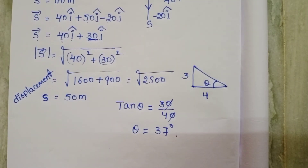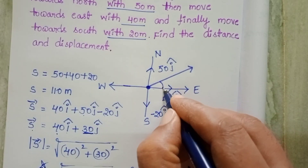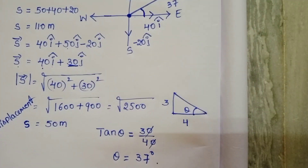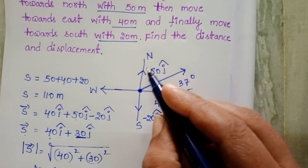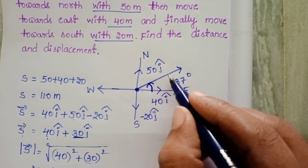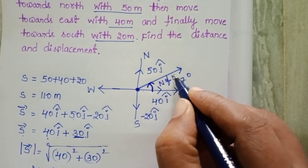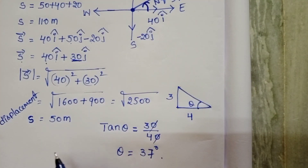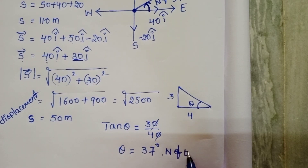But in which direction is this acting? The angle is 37 degrees. Since we get a positive value, this corresponds to the anti-clockwise direction — which is north of east. So finally, the direction of the particle is 37 degrees north of east.